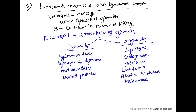There are also lysosomal enzymes and other lysosomal proteins. Neutrophils and monocytes contain lysosomal granules that contribute to microbial killing. Neutrophils contain two types of granules: primary granules, which contain myeloperoxidase, lysozymes, defensins, hydrolases, and neutral proteases; and secondary granules, which contain lysozymes, collagenase, gelatinase, lactoferrin, alkaline phosphatase, and histaminase. These contents lead to the destruction of the microbe.